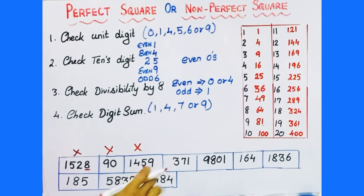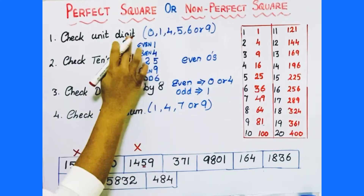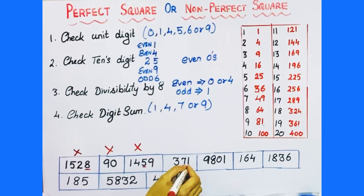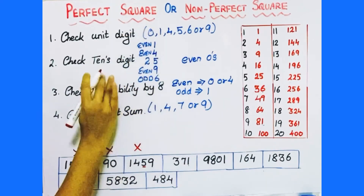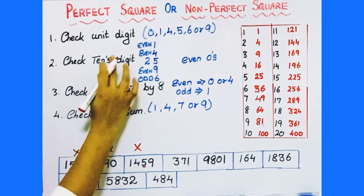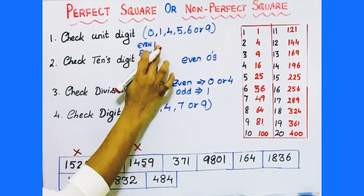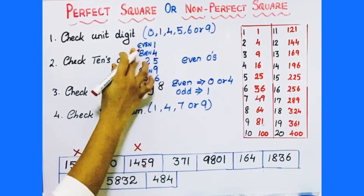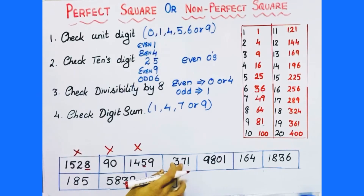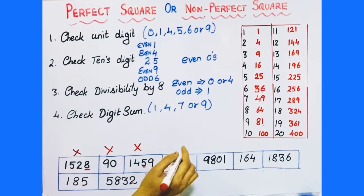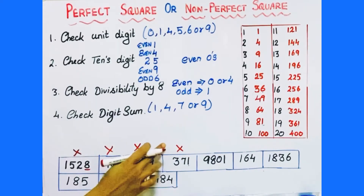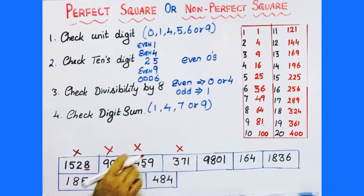Next number is 371. Check the unit digit — it is 1, so it passes. Next test: check the tens digit. If the unit digit is 1, the tens digit should be an even number. But it is not an even number. So it fails — 371 is not a perfect square number.